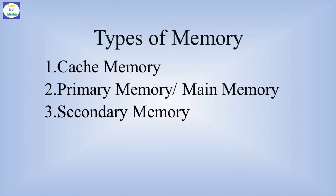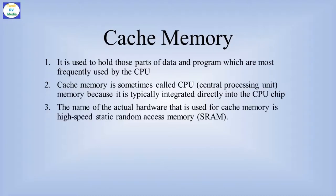There are three types of memory. One is cache memory. Second is primary memory or main memory. Third is secondary memory. If we talk about cache memory, it is a temporary memory.